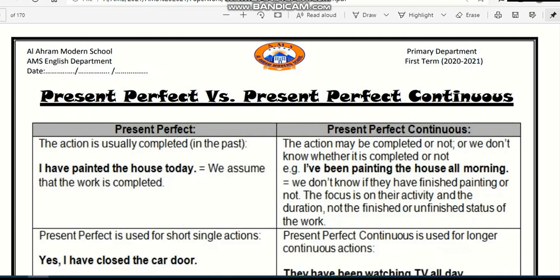But in present perfect continuous, the action may be completed or not. Or we don't know whether it's completed or not. For example, I have been painting the house all morning. We don't know if they have finished painting or not. The focus here is on their activity and the duration, not the finished or unfinished status of work.